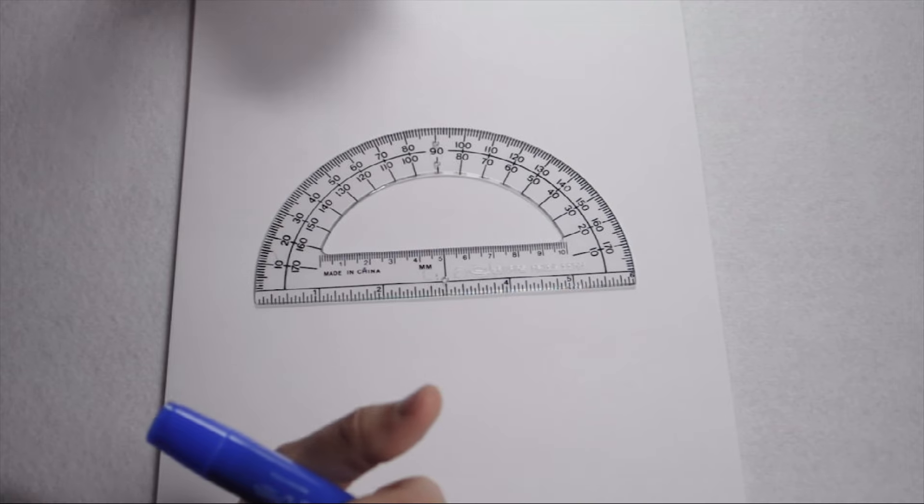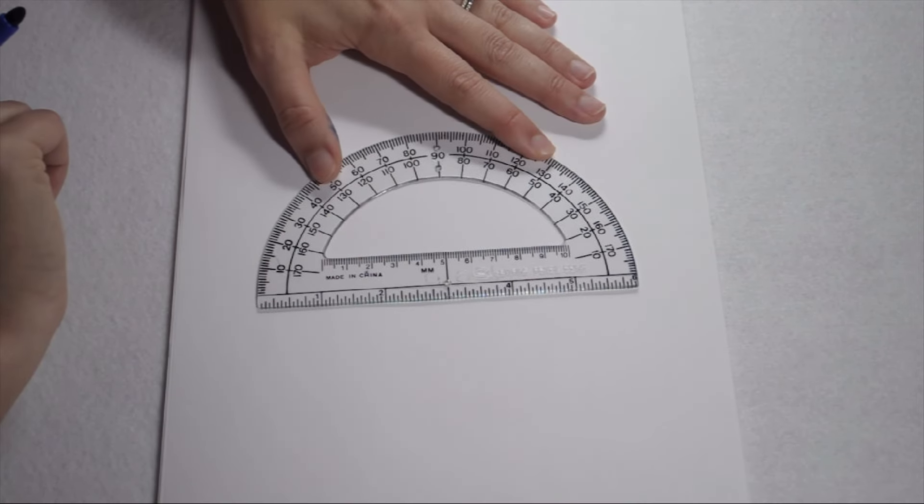If we want to draw an angle, one tool we can use is a protractor. In order to draw an angle with a protractor, I first need to create a ray.